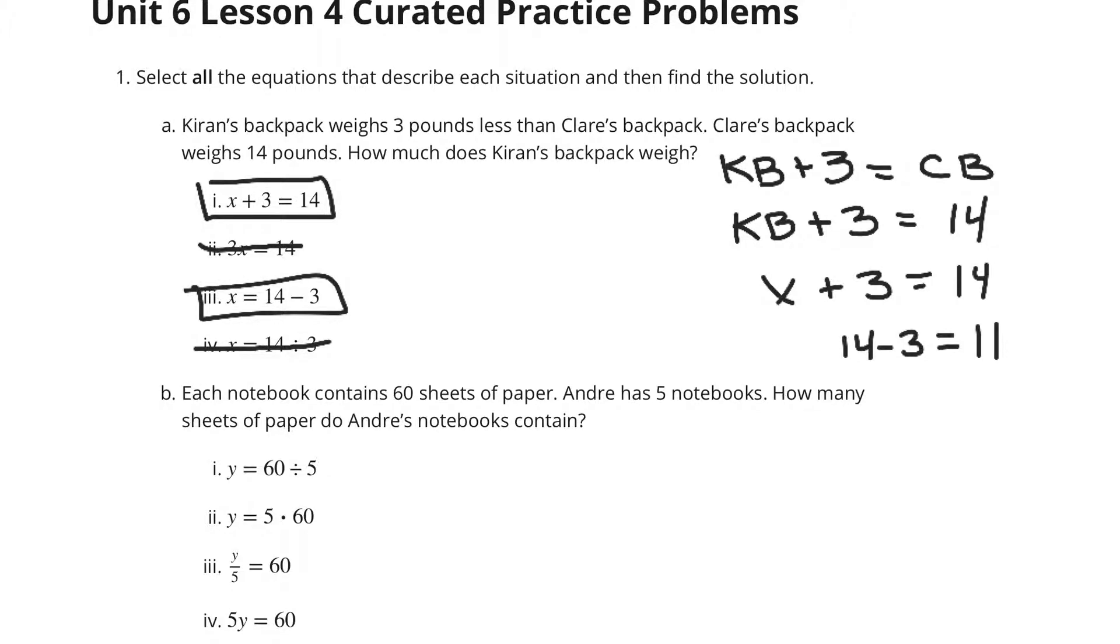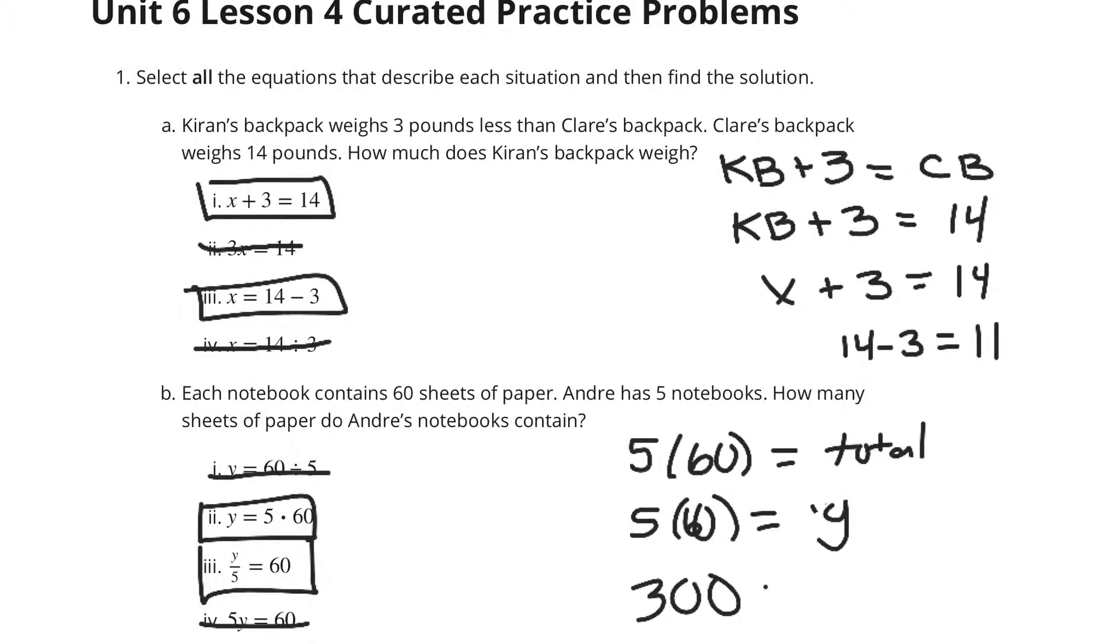In B, each notebook contains 60 sheets of paper. Andre has 5 notebooks. How many sheets of paper do Andre's notebooks contain? He has 5 notebooks, each contains 60. So his total is represented by 5 times 60. In other words, 5 times 60 equals X. Does Y equal 5 times 60? That's exactly what I did. Does Y divided by 5 equals 60? Yes, it does.